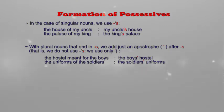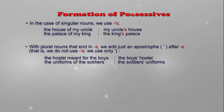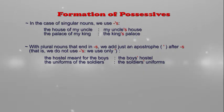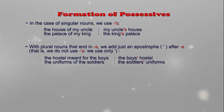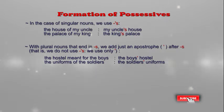For example: 'the hostel meant for the boys'. The hostel belongs to the boys, so we write it in the possessive form as 'the boys' hostel'. The noun 'boys' is already in the plural and ends with s, so you just add an apostrophe mark after the s — it becomes 'boys' hostel'.